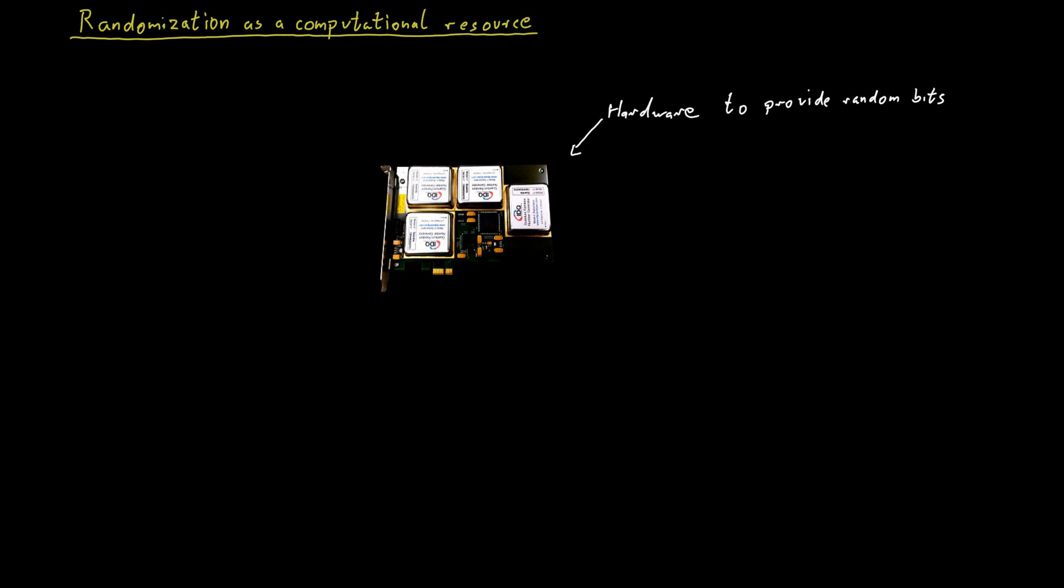Such devices are based on different techniques to generate those random bits. So one way of doing this for example is you can shoot photons onto a semi-transparent mirror and then measure whether the photon was reflected from the mirror or went through. And that basically gives you a random bit. So you say we have a 0 if it's reflected and a 1 if it goes through the mirror.